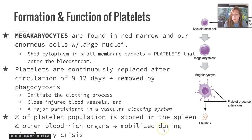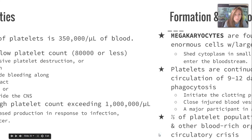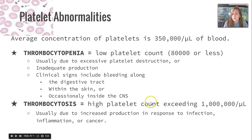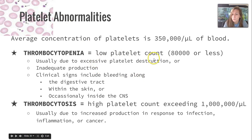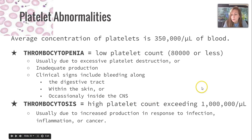One third of the platelet population is stored in the spleen and other blood-rich organs and is mobilized during circulatory crises such as severe blood loss. Regarding platelet abnormalities: normal average concentration is 350,000 per microliter of blood. Thrombocytopenia is a low platelet count of 80,000 or less, usually due to excessive platelet destruction or inadequate production; clinical signs include bleeding along the digestive tract, within the skin, or occasionally inside the CNS. Thrombocytosis is a high platelet count exceeding one million per microliter, usually due to increased production because of infection, inflammation, or cancer.